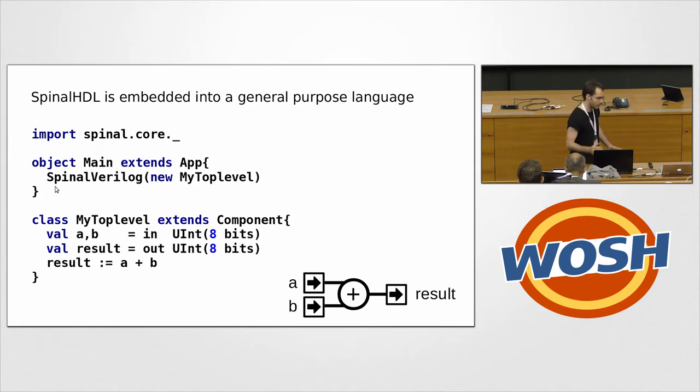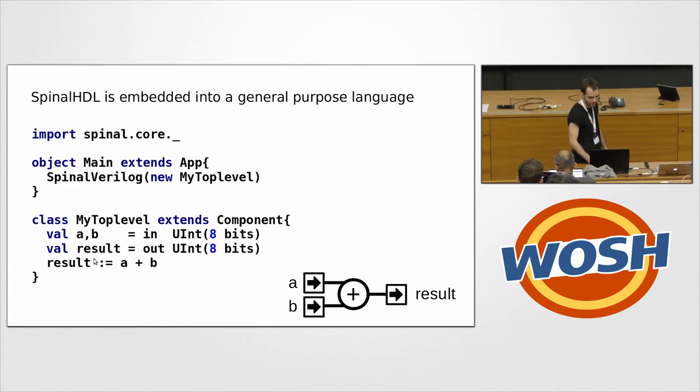SpinalHDL is a Scala library. So here I'm using Scala, it could have been a Python library, it could have been a C++ library. The idea is we are using software as an elaborate tool for the hardware we want. So, let's go through the example. First, we are importing the SpinalHDL tool in Scala language. Then, because we are in Scala language, if we want to ask the tool to generate the hardware we want, we have to ask the tool, like, convert something into Verilog, which is this top level.